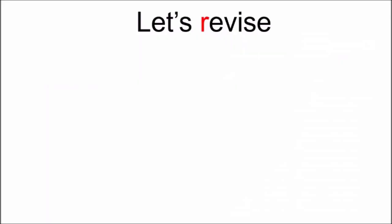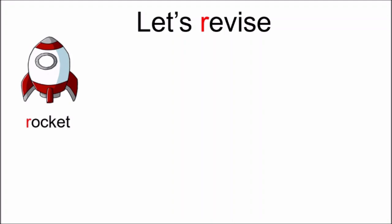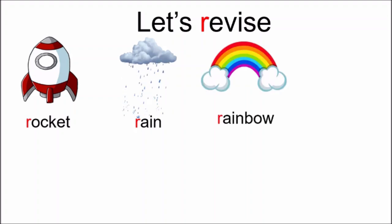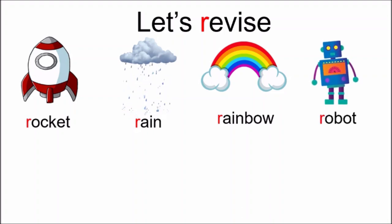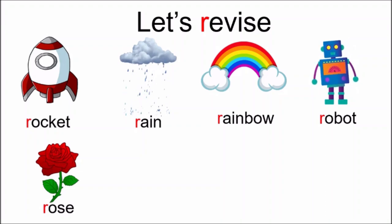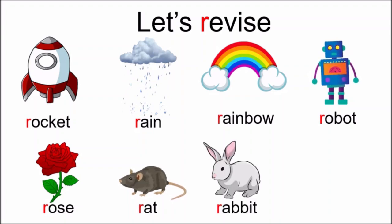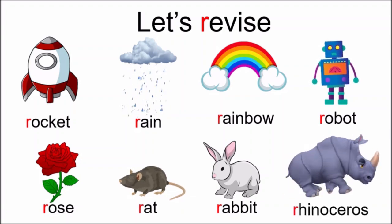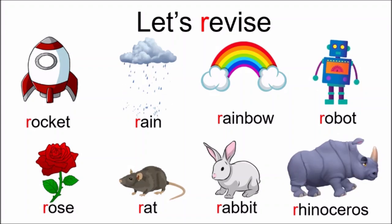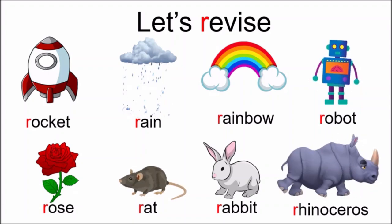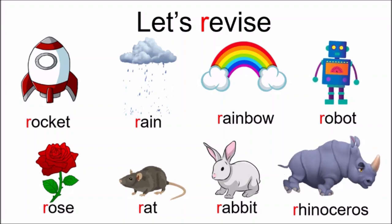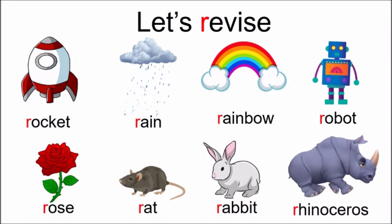Now kids, let us revise. R — revise. What all things did we see with letter R? R — rocket. R — rain. R — rainbow. R — robot. R — rose. R — rat. R — rhinoceros.